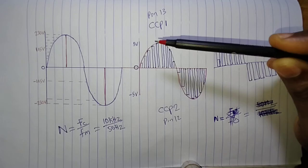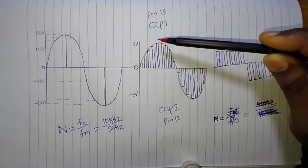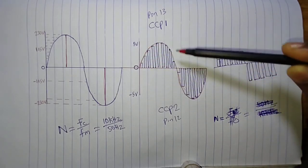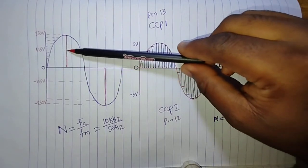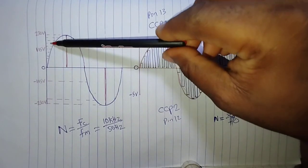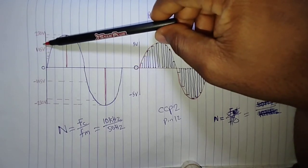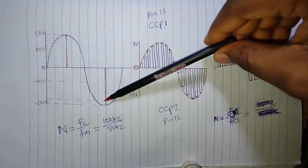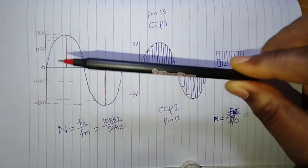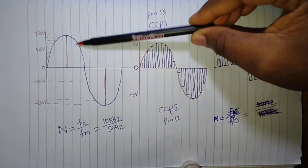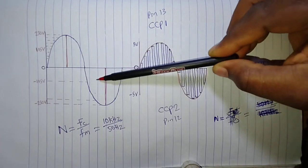Let's first understand how this pure sine wave SPWM can be generated. If you look at this signal, this is our final output voltage — the signal we are expecting from our inverter output. This is how it works: this is the first curve of the sine wave, and this is the second curve — this is the positive voltage and this is the negative voltage.